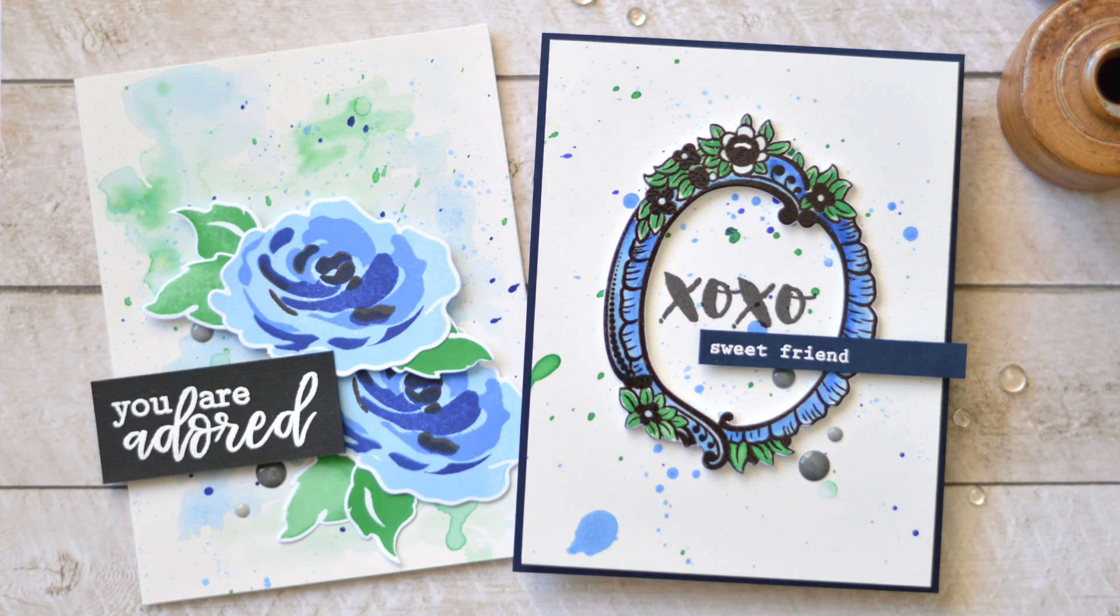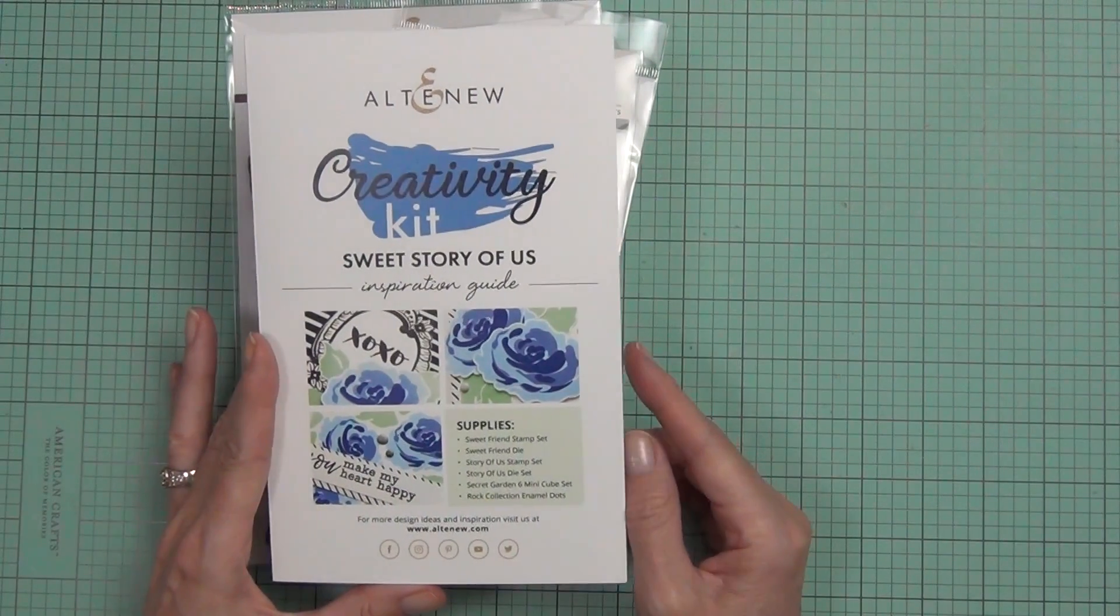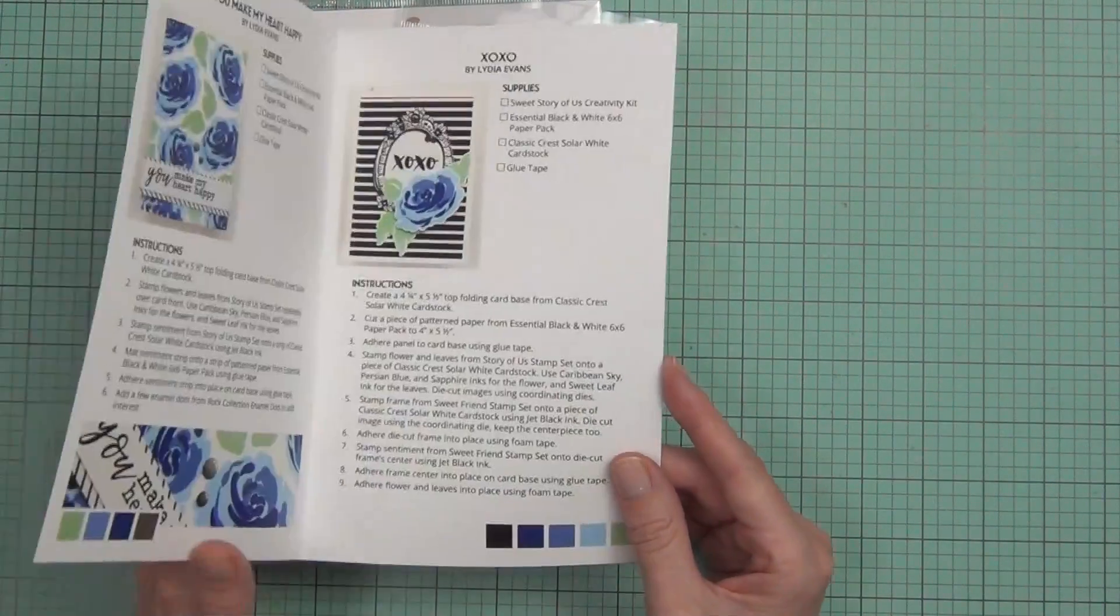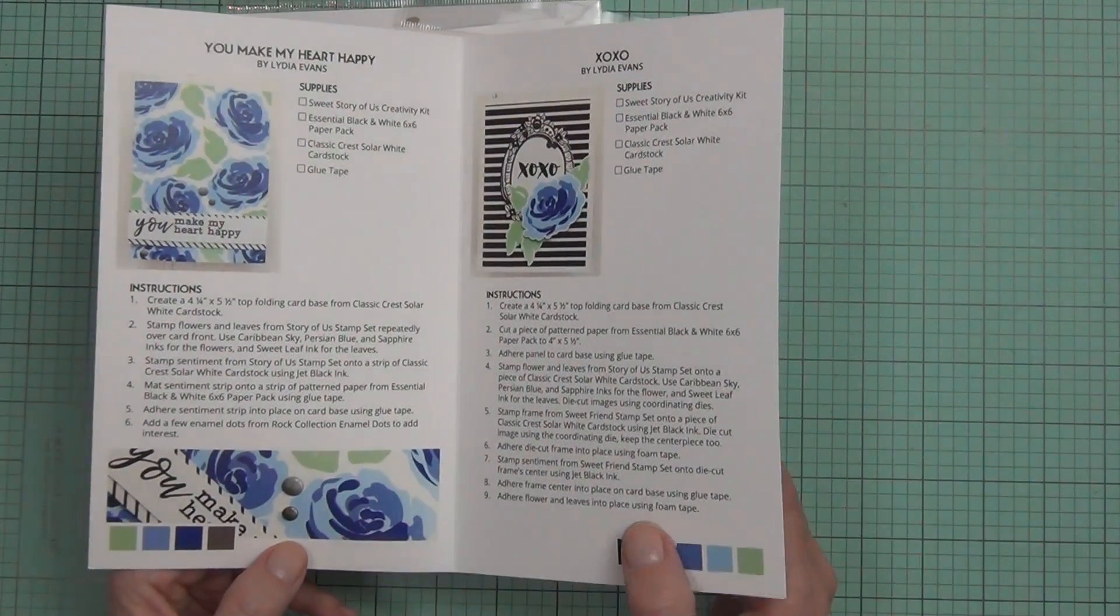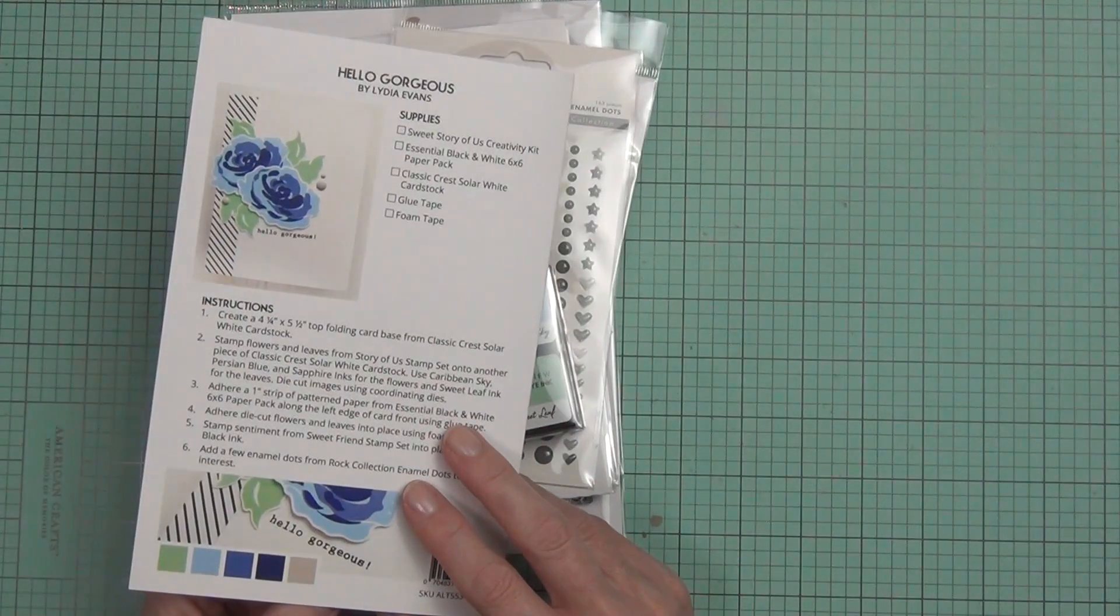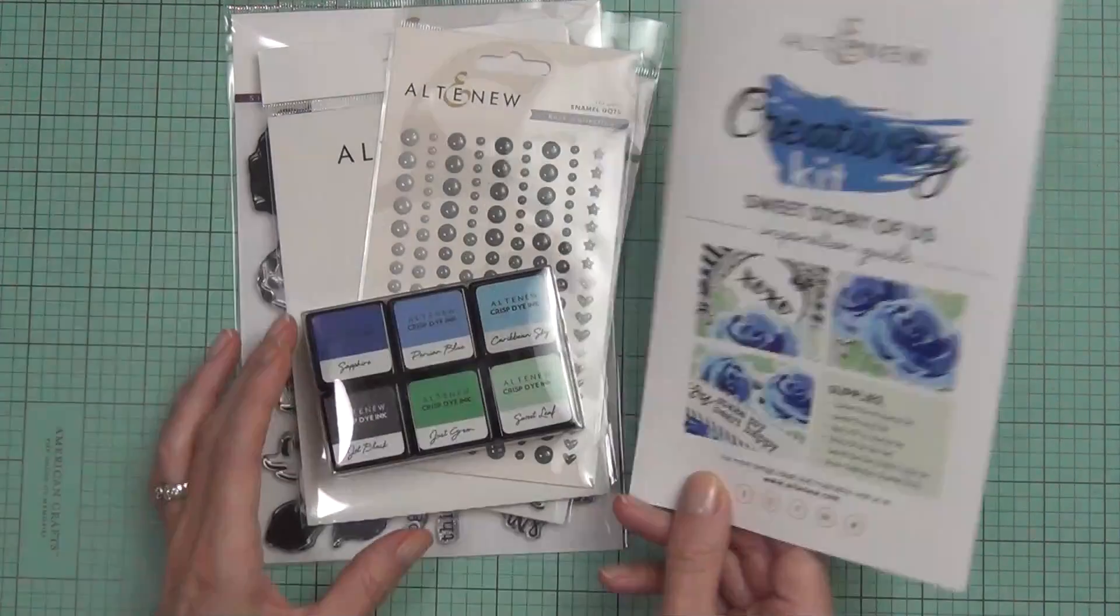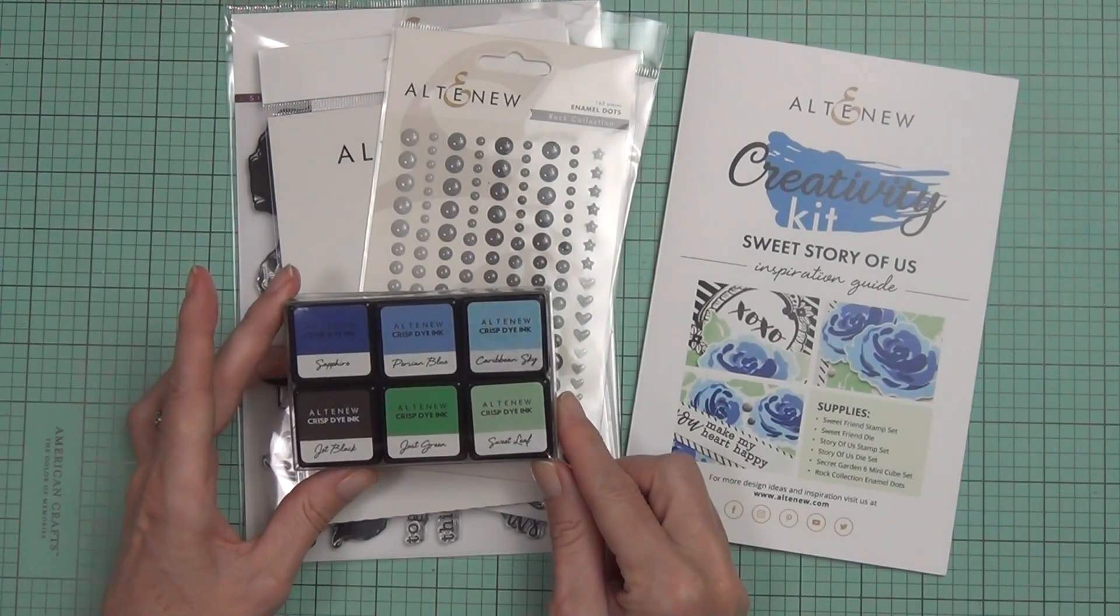I have another Take Two with Therese today for Altenew, and today I'm going to be using this creativity kit called Sweet Story of Us. These kits come with an inspiration guide, so when you get your products you can just jump straight into it and make some cards. All the instructions are there.